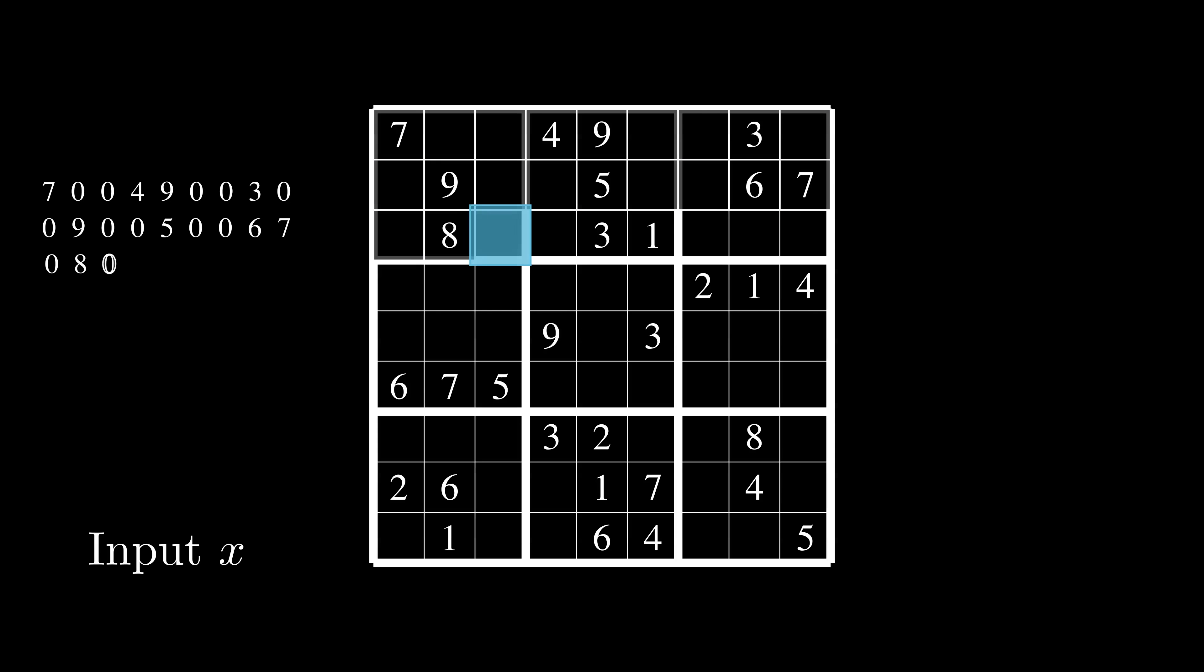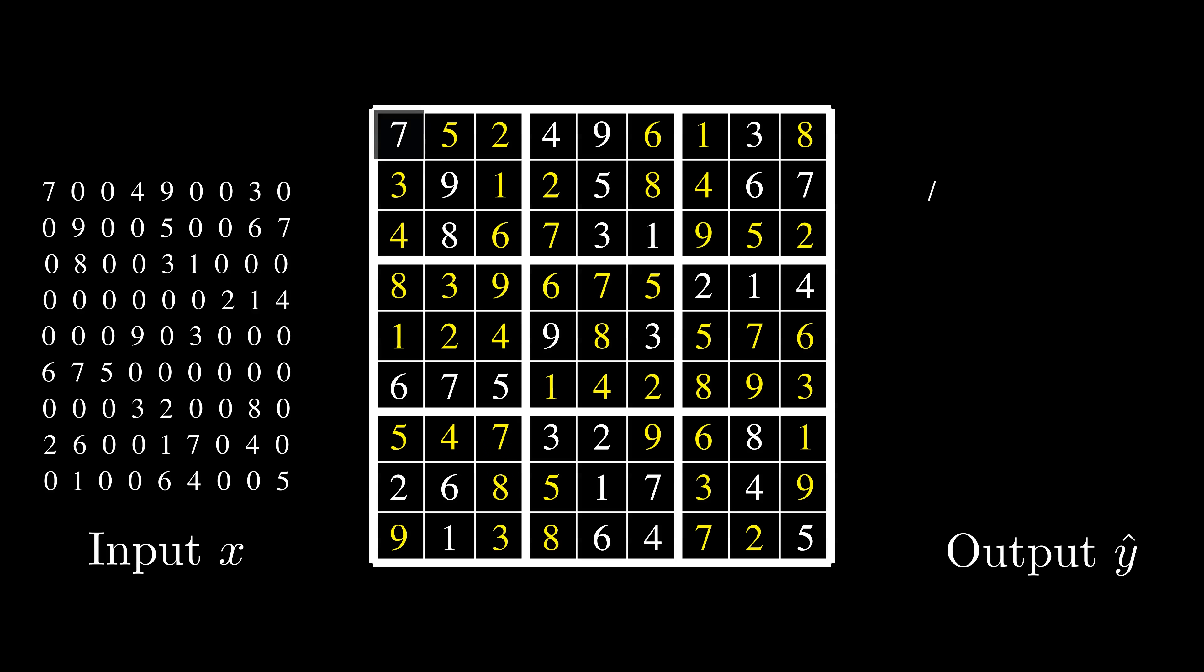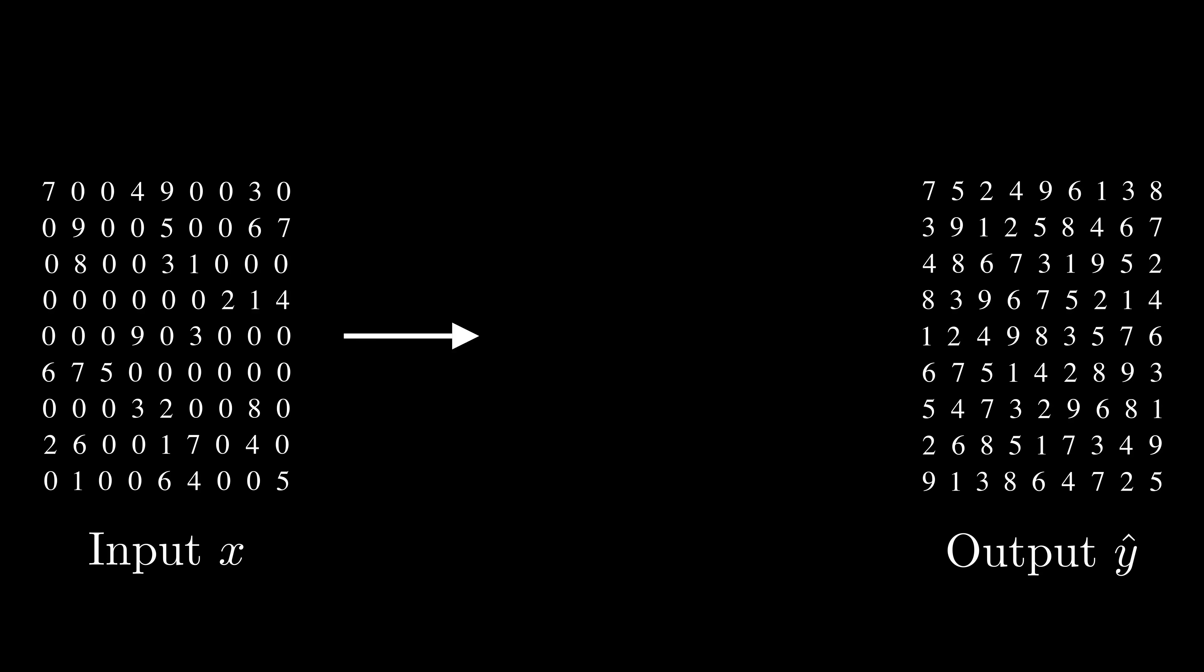We represent the missing entries in the puzzles with the number 0. The solution to the puzzle is also expressed as a sequence of numbers. Our goal is to train a model that can map an input puzzle to its corresponding solution.